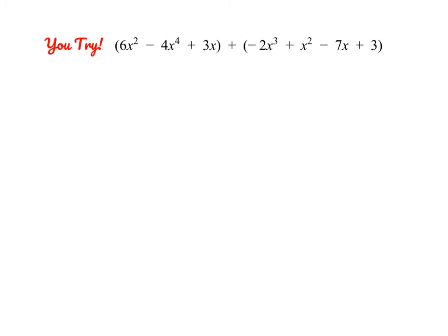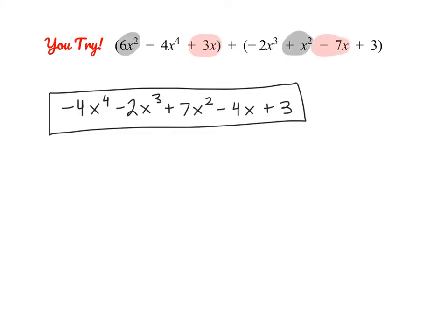Go ahead and pause the video and give this one a try on your own, and we'll check your answers in just a few seconds. Go ahead and check your work. You can combine 6x squared and 1x squared to get 7x squared, and combine 3x and negative 7x to give you negative 4x. The other three terms stay the same. Make sure your answer is in standard form — the degree should be in descending order.